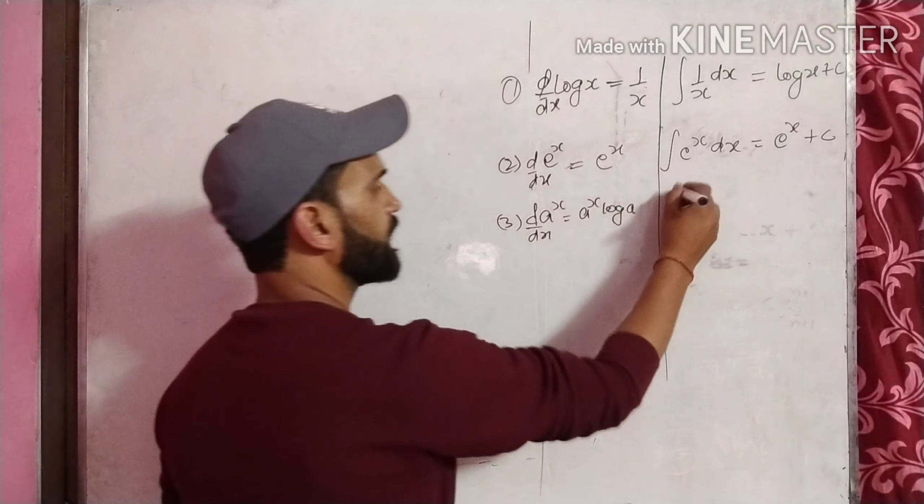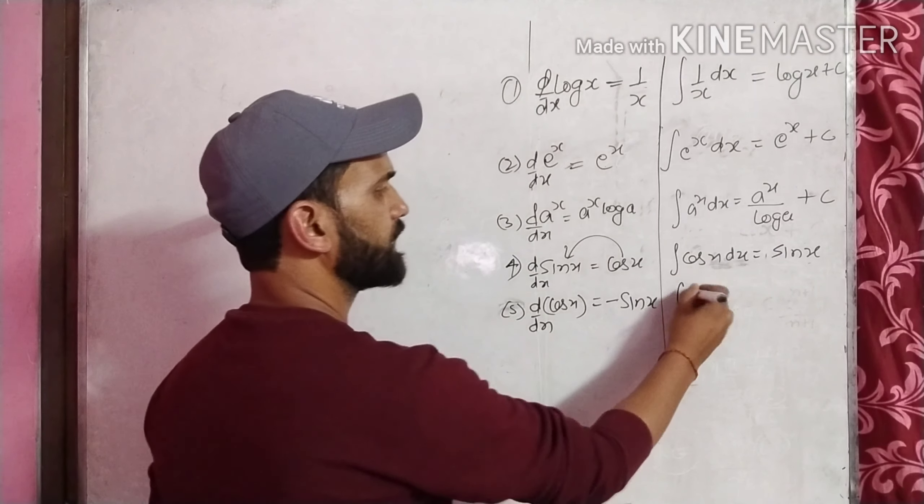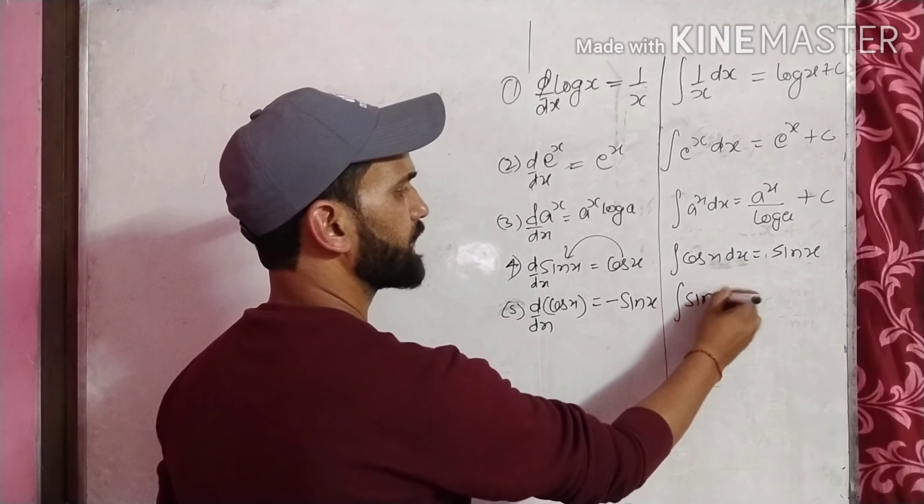Similarly, for trigonometric functions: sin x का जो derivative होता है, वो होता है cos x। तो अगर मैं cos x का integral find out करूँ, तो वो sin x होगा। Similarly, differentiation of cos x is minus sin x, then integration of sin x will be equals to minus cos x plus c.